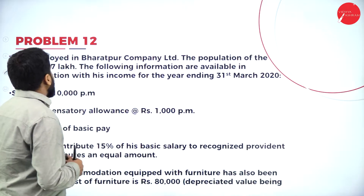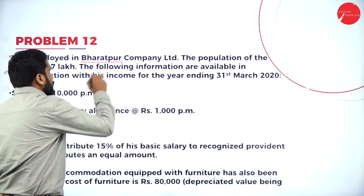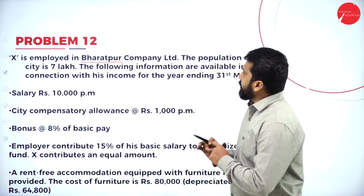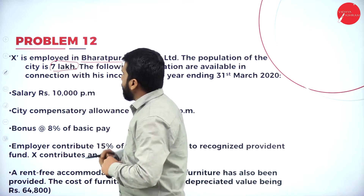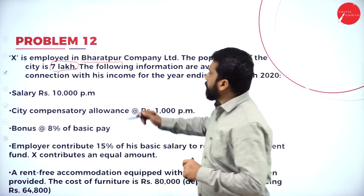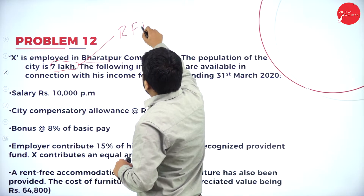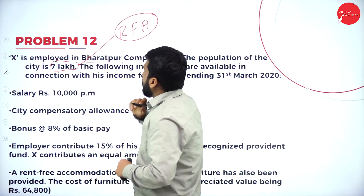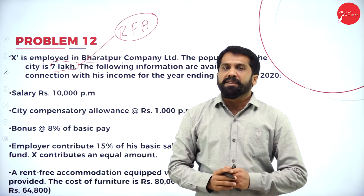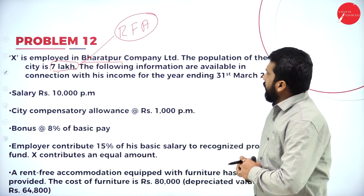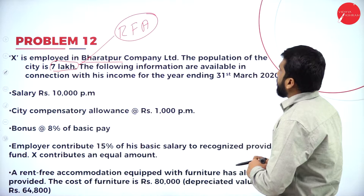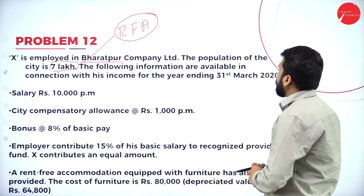X is employed in Bharatpur Company Limited. The population of the city is 7 lakh. They have mentioned the population because in this problem you have rent-free accommodation — that's why they have given information about population. The following information are available in connection with his income for the year ending 31st March 2020.